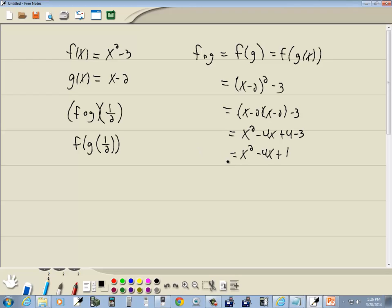And then we'll plug 1 half in for the x. So we would have 1 half squared minus 4 times 1 half plus 1. That gives us 1 fourth minus 2 plus 1, which gives us 1 fourth minus 1.